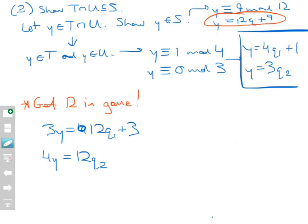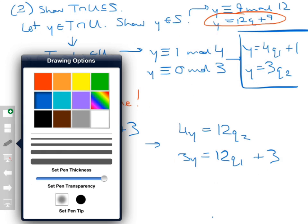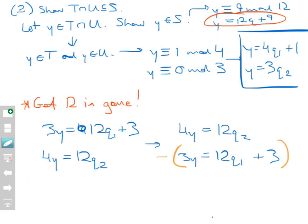I now have a system of two equations that are true simultaneously. Rearranging them: 4Y equals 12Q₂, and 3Y equals 12Q₁ plus 3. Just like solving systems of two equations back in high school, I subtract one equation from the other. On the left side: 4Y minus 3Y equals Y. On the right side: 12Q₂ minus 12Q₁ minus 3. So Y equals 12Q₂ minus 12Q₁ minus 3.